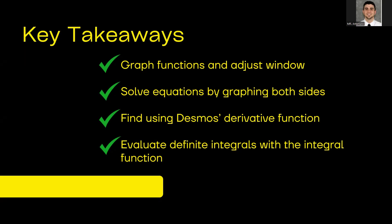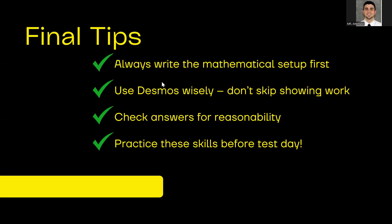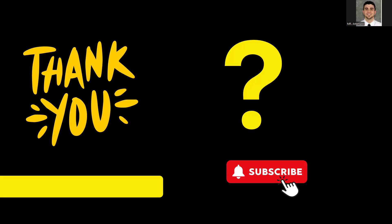Okay, so that's it, guys. Now, a couple key takeaways as we wrap up. Make sure that you are graphing functions and adjust the window in Desmos. Make sure you know how to do that. Make sure you know how to solve equations by graphing both sides and finding the intersection point. Use the derivative capabilities to find f'(a), and evaluate definite integrals with the integral function. And don't forget, you always need to show your setup in standard math notation, not just Desmos inputs, although Desmos often will have the correct mathematical notation there. Well, guys, if that video helped, hit that like button and subscribe for more AP Calculus tips. Drop me a comment below if you have any questions. Thanks for watching, and happy studying. Take care.